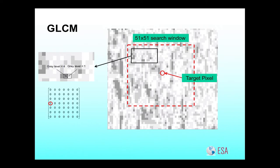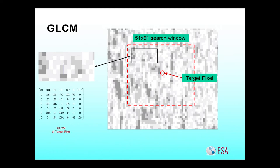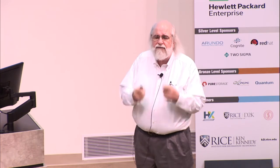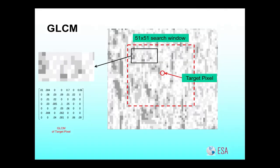In this case, we see a level-four gray — this is a seven-level matrix — next to a one. So we go down to the fourth row in the first column and put in a one. There's also a three next to a two, so we put that in the third row, second column. Once we finish counting all occurrences for all combinations within the neighborhood, we tally those up and divide by the number of possible combinations to get a probability of the co-occurrence of gray levels next to each other, then do statistics on that matrix to characterize the neighborhood.